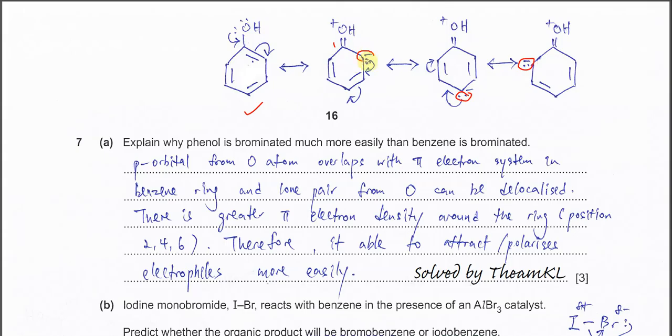We say that the phenol activates the benzene ring at the 2, 4, 6 position. That's the reason why it can react with the electrophile much easier than benzene, because the benzene ring now has more electron density and is more active.